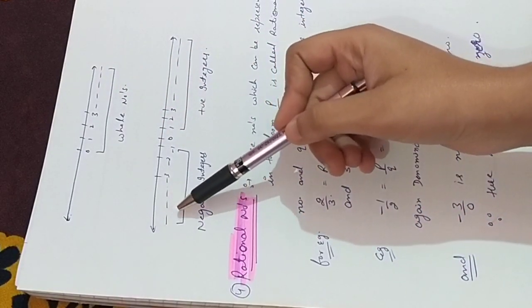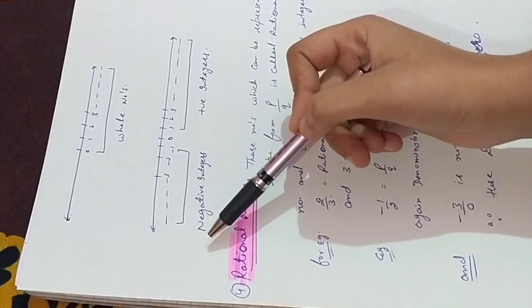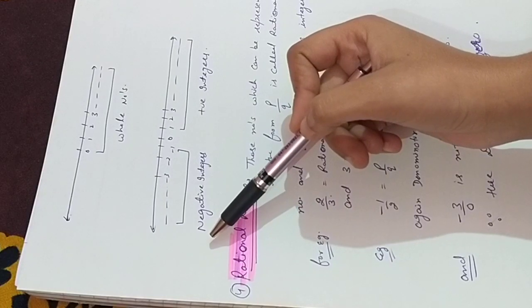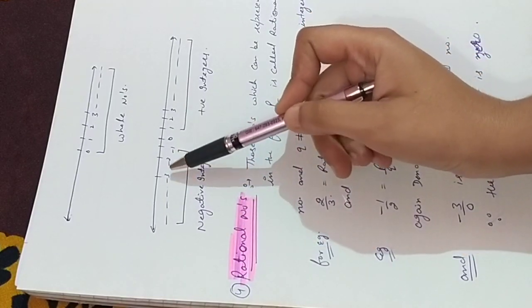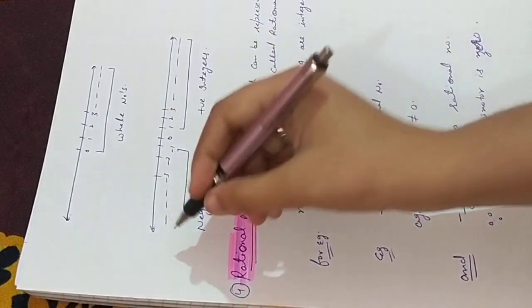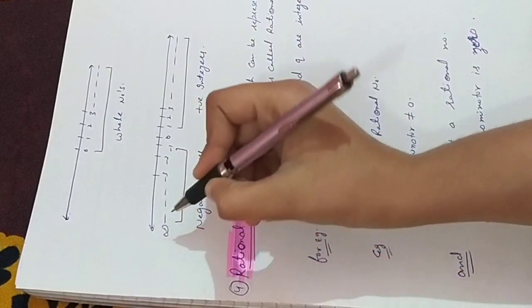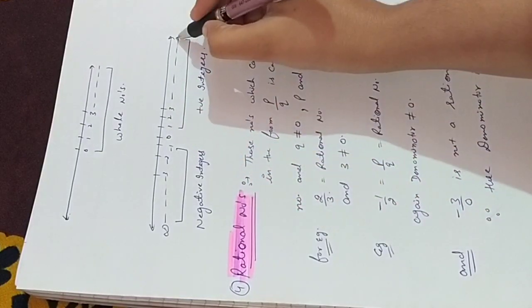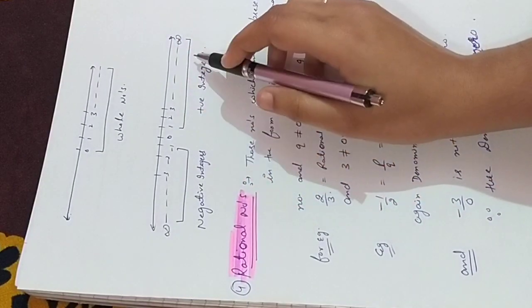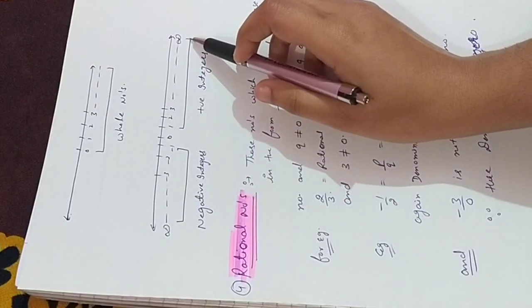After that, we have negative integers and positive integers. Negative integers: minus 1, minus 2, minus 3, up to infinity. Same, 1, 2, 3, up to infinity. It is called positive integers.